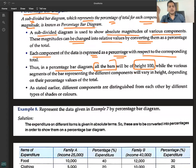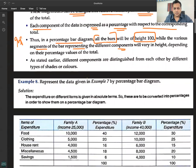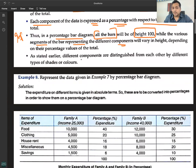Thus in a percentage bar diagram, all the bars will be of height 100. Percentage bar diagram, the total height will always be 100, while the various segments of the bars representing different components will vary in height depending on their percentage values.